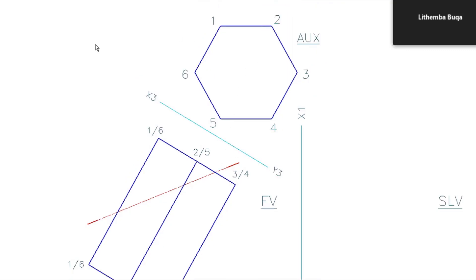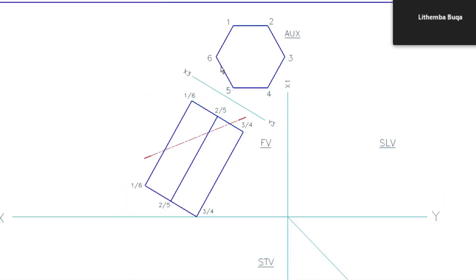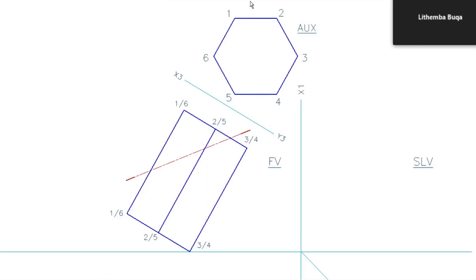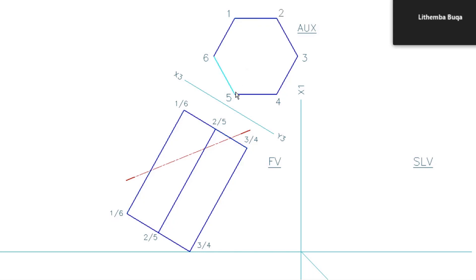I'm going to number the corners - the numbering doesn't count as marks so you can number differently, but I'll use one, two, three, four, five, six. If you don't number, the views become very difficult to do. From the front view I see corners one and six together - there's a one in front and a six behind that line. The same applies to corners two and five, and three and four.